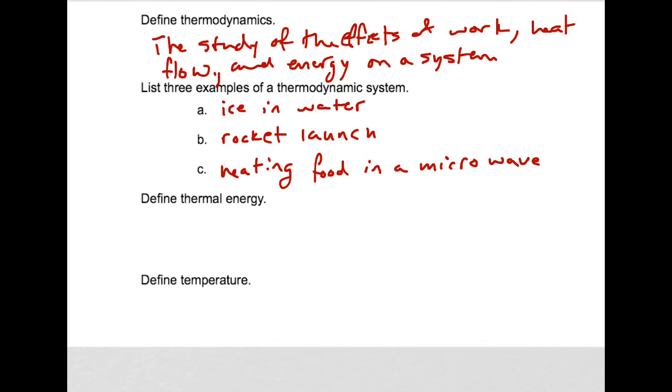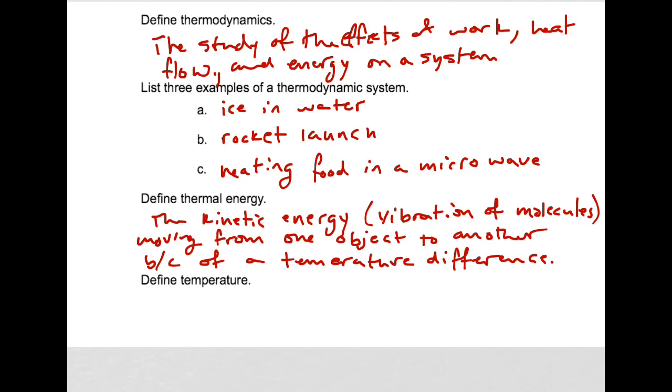From the PowerPoint, it says that thermal energy is the kinetic energy that's in transit from one object to another due to temperature difference. So it's the kinetic energy, the moving particles that are bouncing, that are creating friction and causing heat. Thermal energy is that energy that's in transit, being transferred from one thing to another.